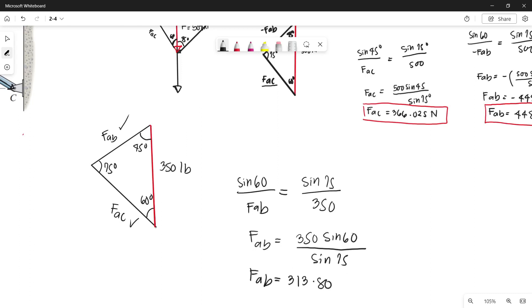Thus we can get the value of our force AB equals 313.80 pounds. So that is the value of the magnitude of force AB.